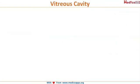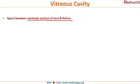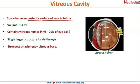The posterior segment of the eye is the vitreous cavity — the space between the posterior surface of the lens and the retina. Its volume is about 4 ml; remember the entire eyeball volume is 6 ml, so the vitreous cavity alone occupies 4 ml. It contains vitreous humor and is the single largest structure inside the eye, with its strongest attachment at the vitreous base.